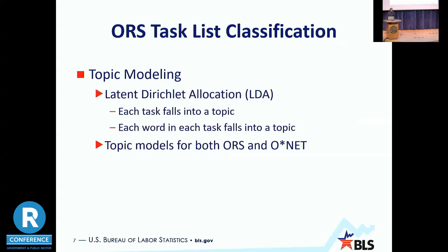We used Latent Dirichlet Allocation, one of the more common approaches to topic modeling. For us, our documents are our tasks — each task falls into a topic, and each word within each task falls into a topic as well. So something like a statement about data science: stop words like 'a' will be removed, and the rest of those words will be organized into different topics. In a two-topic model, maybe one word would be in topic two and the others in topic one — we'd then say this task falls into topic one. There's a lot of statistical machinery behind the scenes, but for our purposes let's give a quick simple example.